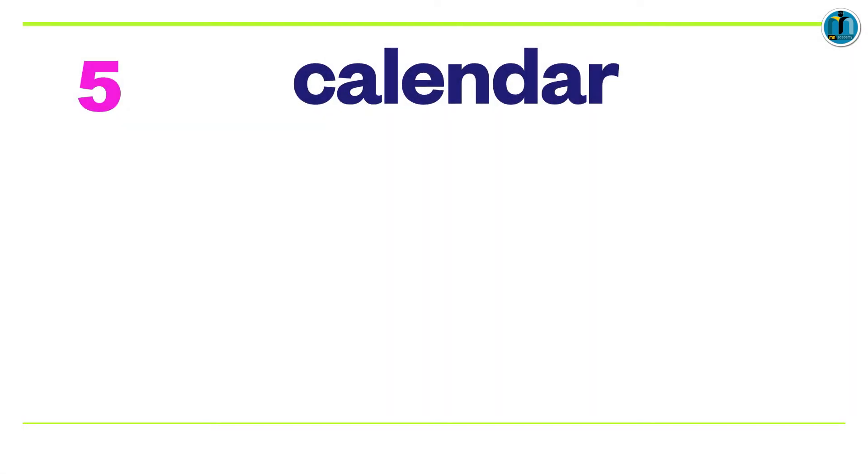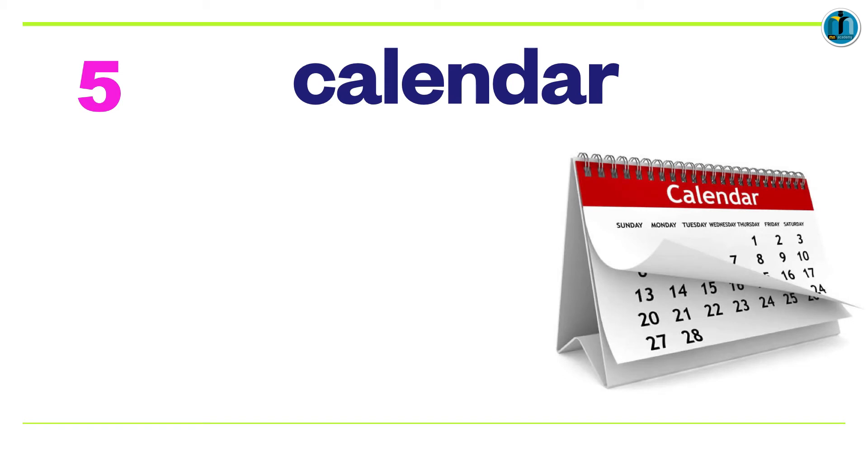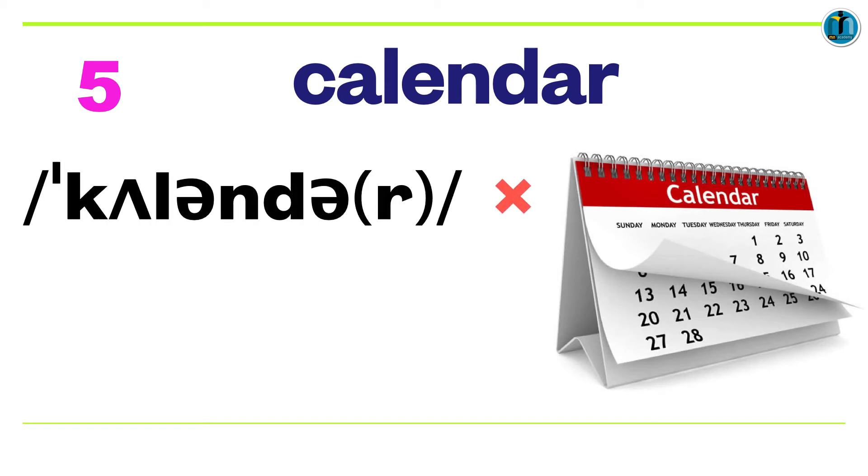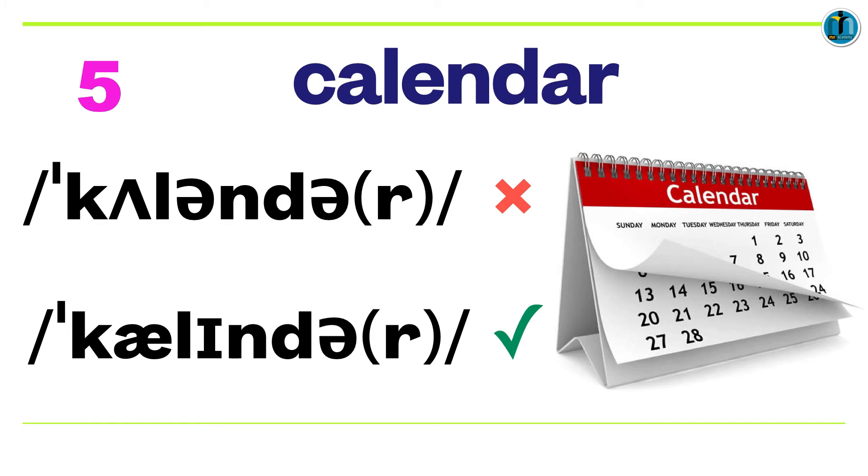Number five: C-A-L-E-N-D-A-R. This is what I asked you to start with. It's not calendar, it's calendar. The first vowel sound is not A, it's æ. And the second vowel sound is not schwa, it's E. Calendar.